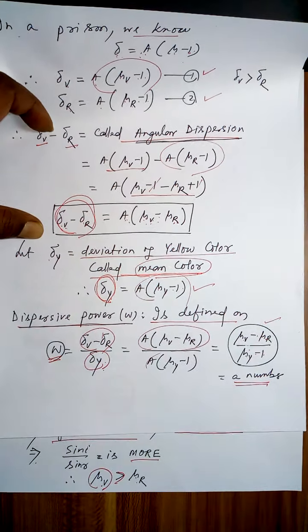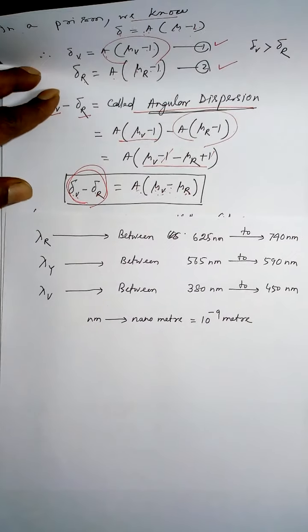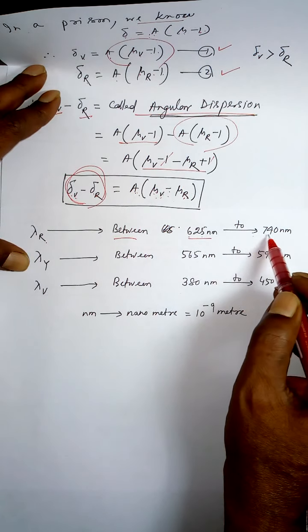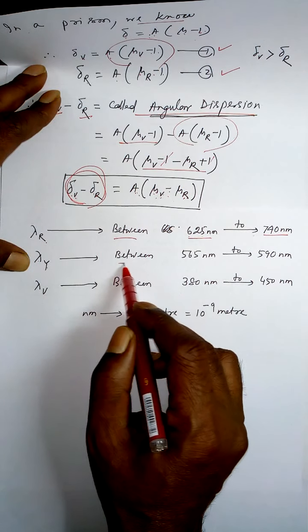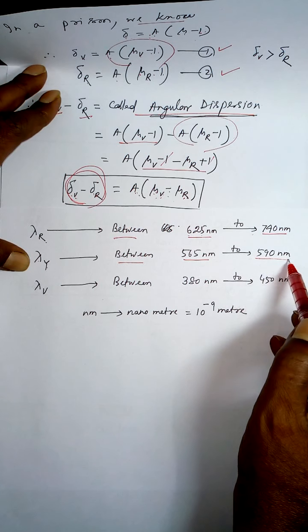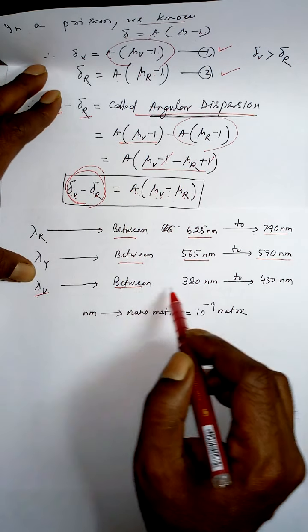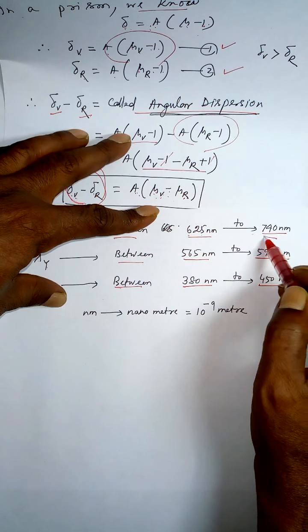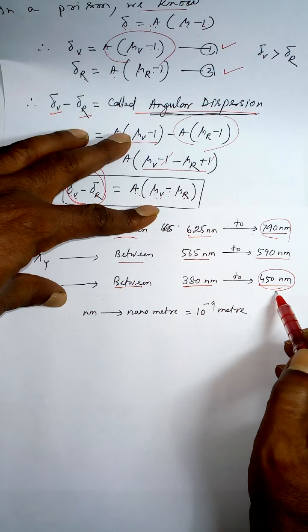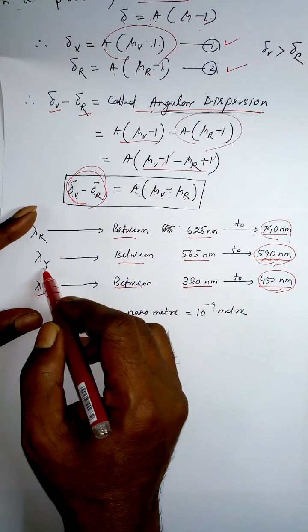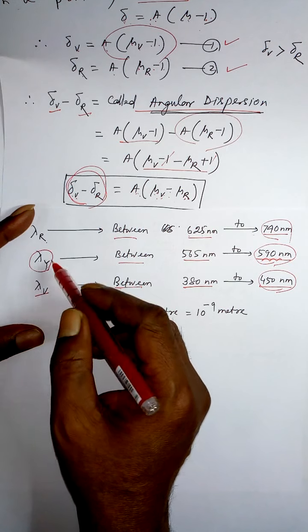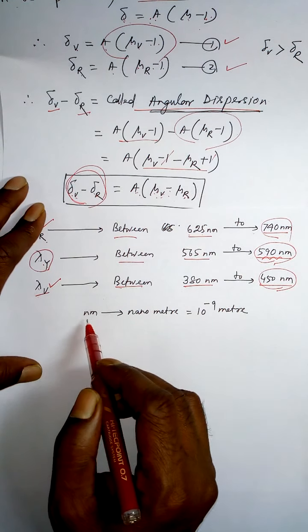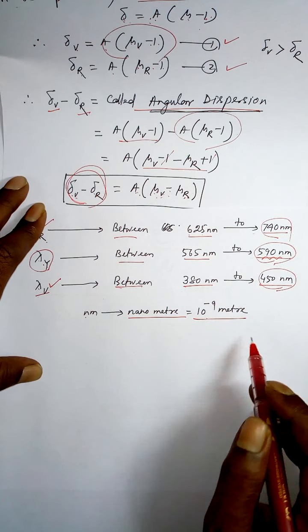Why is yellow called the mean color? The wavelength of red is between 625 nm to 740 nm, and the wavelength of violet is between 380 nm to 450 nm. The wavelength of yellow lies in between the wavelengths of red and violet — their average is nearly equal to yellow's wavelength. Therefore, yellow is called the mean color. Note: 1 nanometer equals 10 to the power minus 9 meter.